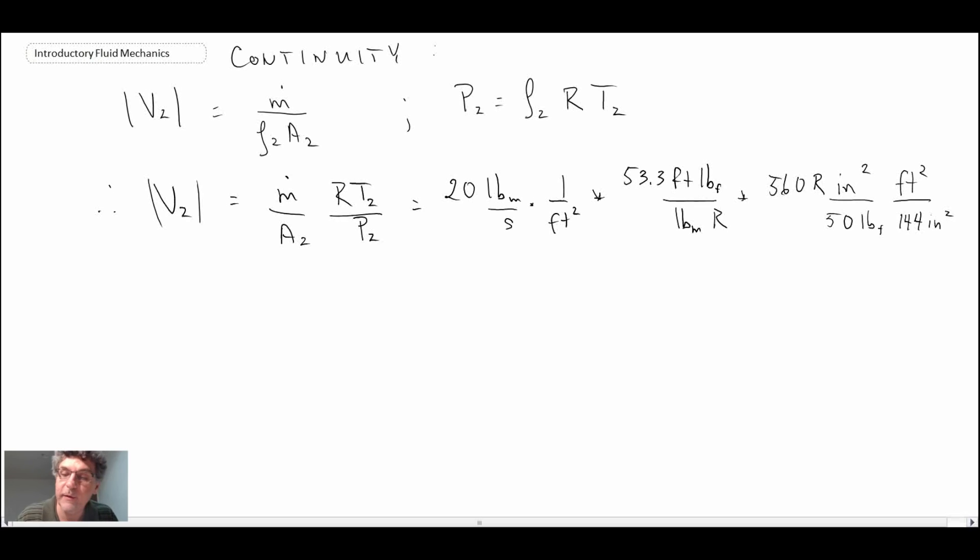Okay, so there we got a lot of stuff. We're doing unit conversion in here, that's why it's a little messy. But when you go through and you put in the values, you get the velocity at 2 is 82.9 feet per second. So that's what we get out of continuity.